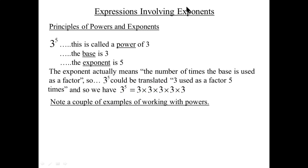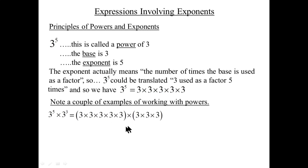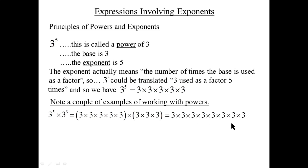Let's do a couple of examples. Three to the fifth times three to the three: that's three used as a factor five times, so three × three × three × three × three, times three to the three — three used as a factor three more times. Without the brackets we can count all the threes: one, two, three, four, five, six, seven, eight — so it's three used as a factor eight times.